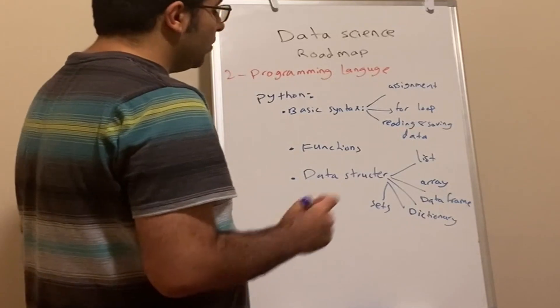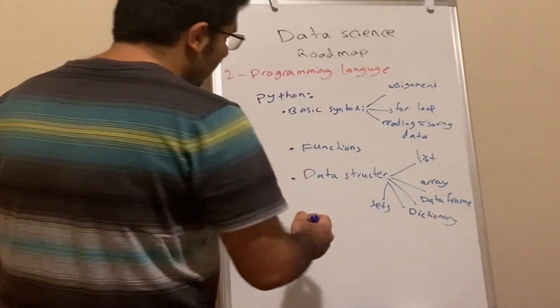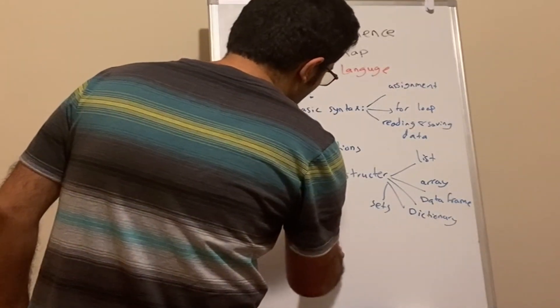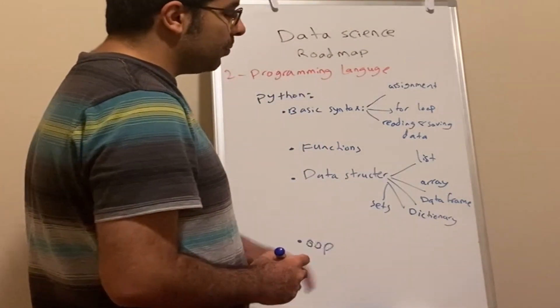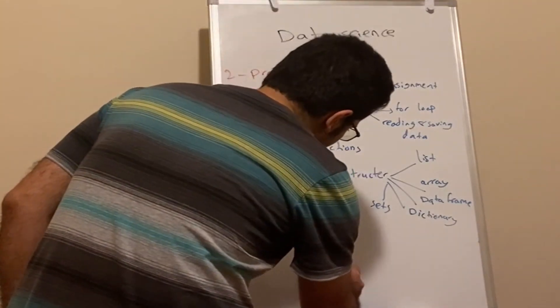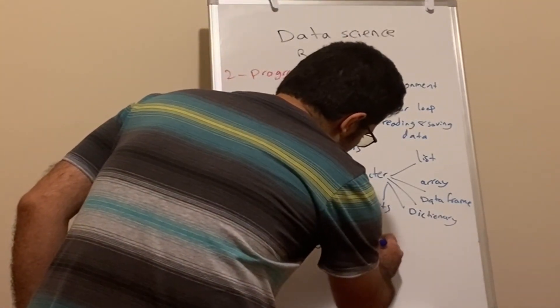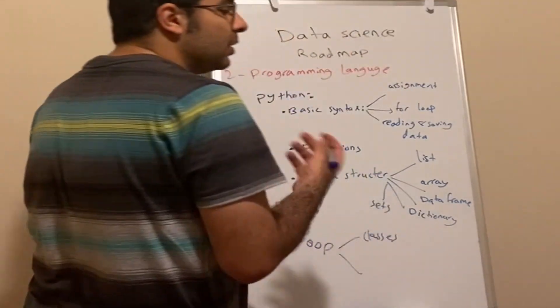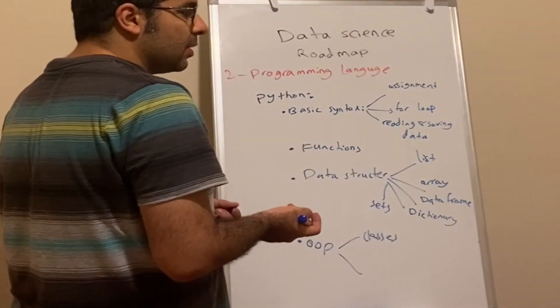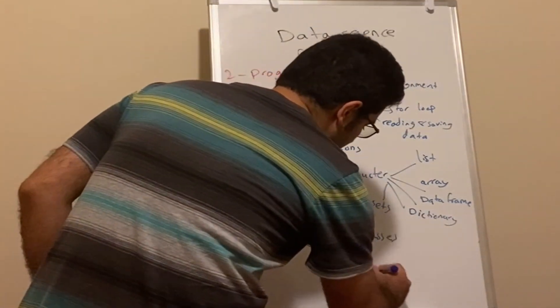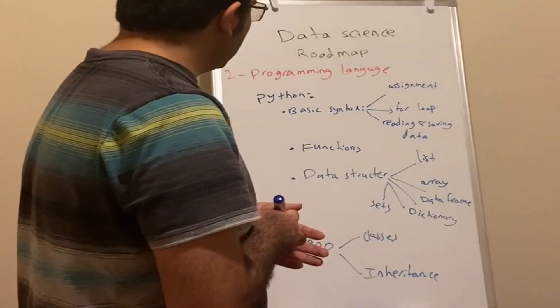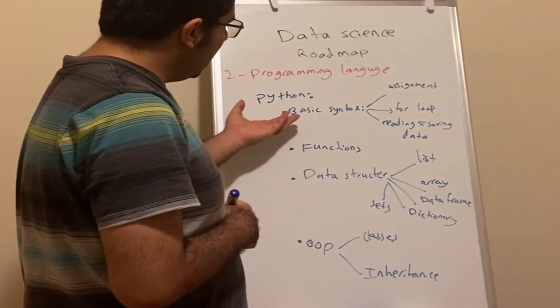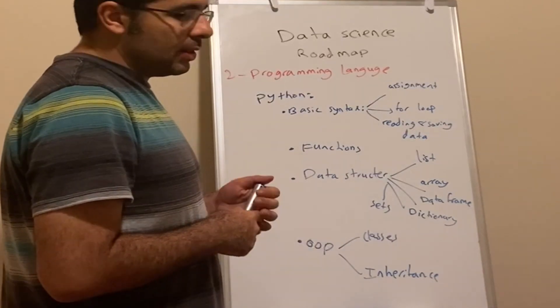Once you're comfortable with all this, we need to understand object-oriented programming. For that, we need to know classes, how to define classes, how to instantiate the class, and then we need to know inheritance. That's going to be good for the Python side. We need to understand and be comfortable with these concepts.